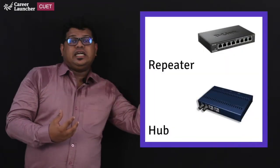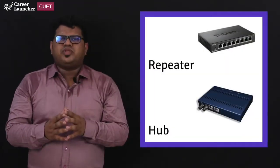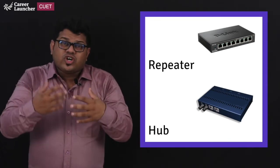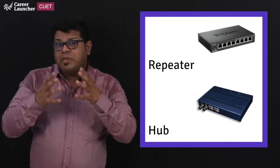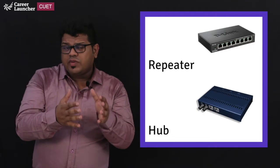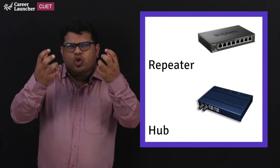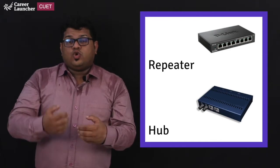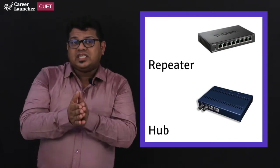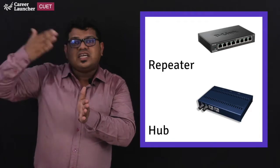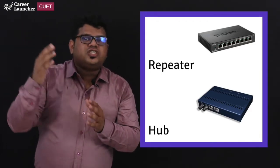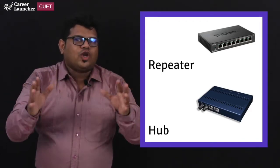Then we come across something called as repeater. So repeater is something which is used to repeat the signals. Basically when a signal is going to be transmitted after a certain distance it might lose its strength. To gain its strength we are using this repeater and we are going to repeat the signal again and again till it reaches its destination without any loss.